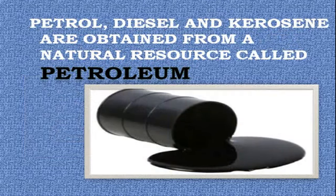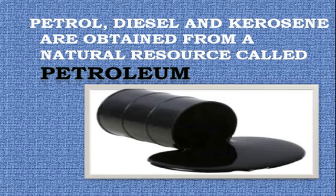Petrol, diesel, and kerosene are obtained from a natural resource called Petroleum. Like coal, Petroleum is also an exhaustible natural resource. It is a fossil fuel and a combination of many components.